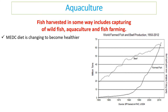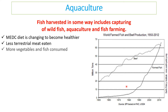Medium economically developed countries are becoming healthier, and one reason is because we're eating less meat. The level of meat production has started to level off, and fish consumption has increased above the level of meat production. So more vegetables and fish are being consumed in the developed world compared to previously.